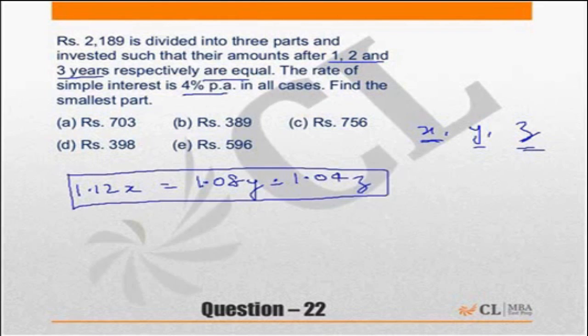Find the smallest part. The sum of the three numbers are 2,189. So x plus y plus z is equal to 2,189.